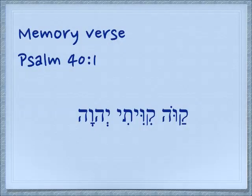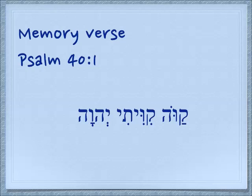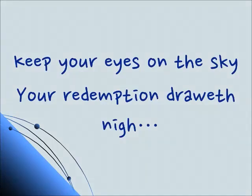So our memory verse is Psalm 40:1 — 'Kavo kiviti Yehovah.' This is a case where you need to learn how to read your vavs. The vav with the dot in the middle is not a vowel here — the kuf has its own vowel, so the next element must be a consonant with its own vowel, that dot on top. 'Kavo kiviti Yehovah' — 'I have surely waited for Yehovah.' Until next time, keep your eye on the sky — your redemption draweth nigh. Shalom.